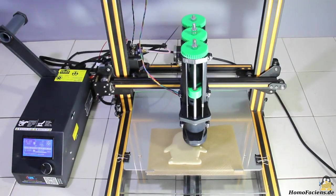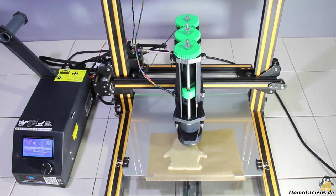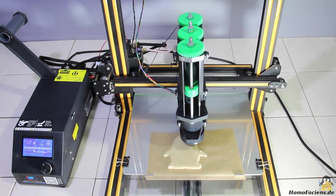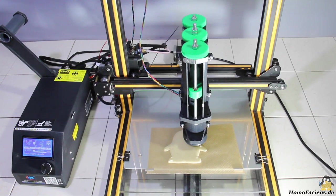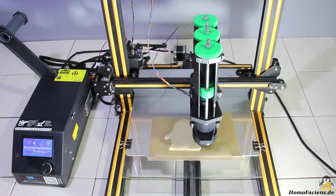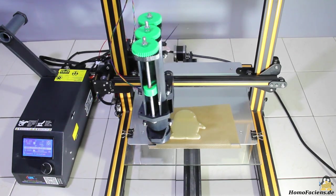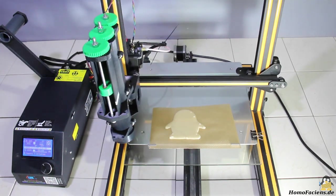The syringe used has a maximum volume of 20 cubic centimeters. The CAD model of the Linux mascot Tux printed here has a total thickness of 3mm. I split the G-code file in half with a text editor so that the printing is interrupted after the first layer.